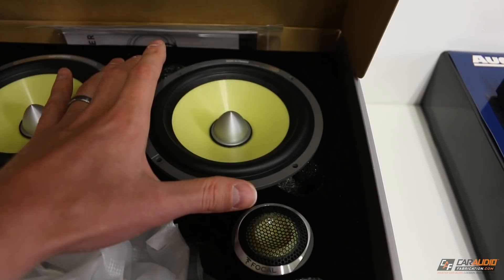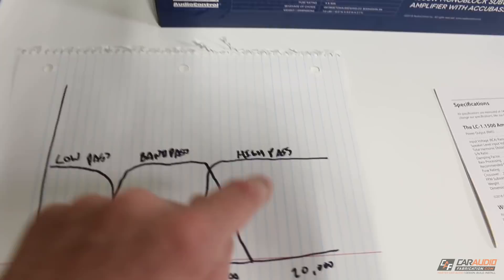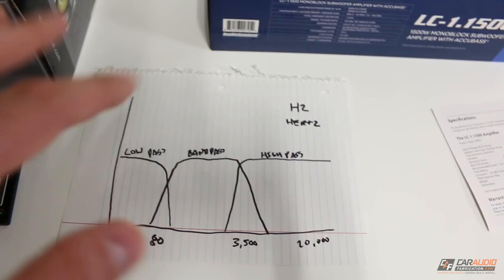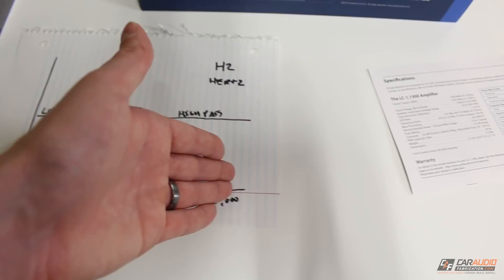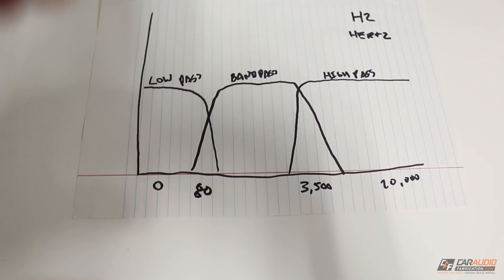Finally, we have a high pass crossover — it's going to let everything above a certain value pass through. This is for something like tweeters. Now you may have heard the term full range. Our human hearing occurs from something like 20 Hertz up to 20,000 Hertz, so a full range signal means a signal that encompasses from 20 Hz all the way up to 20,000 Hz. That's full range.